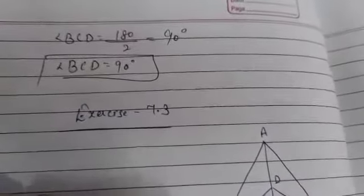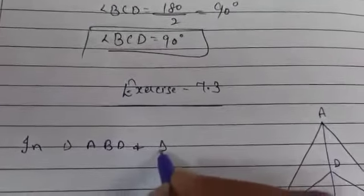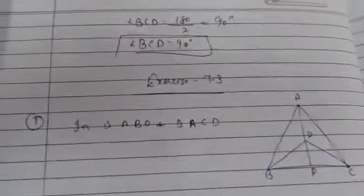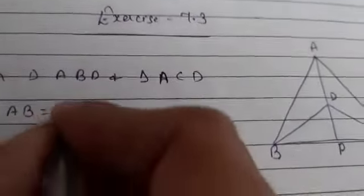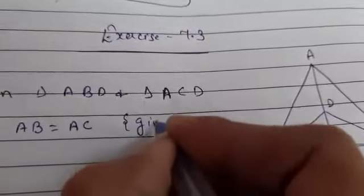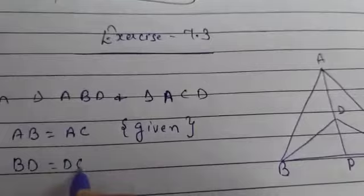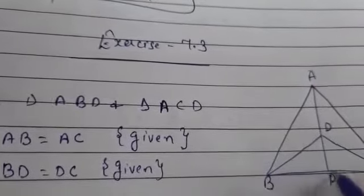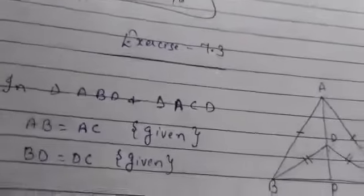First of all, we will consider triangle ABD and triangle ACD. These two triangles we have decided to prove congruent. Now see in these triangles: AB equals AC — that is given because they said it is an isosceles triangle. Then BD is equal to DC — that is also given because triangle DBC is also isosceles. So this side equals this side.